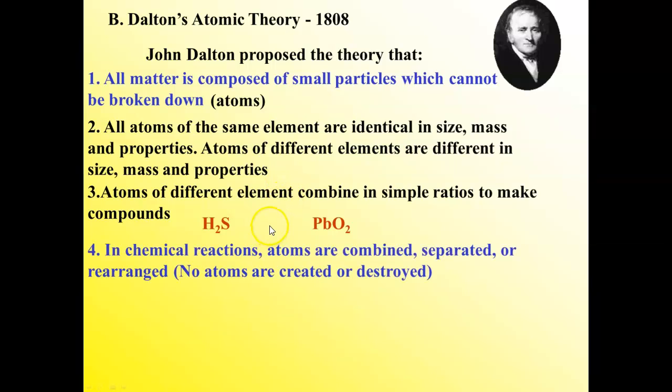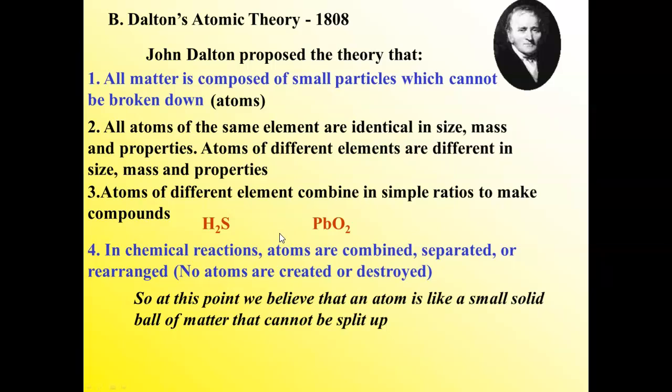His fourth point was that a chemical reaction is not the creation of atoms or the destruction of atoms. It's just the rearrangement of atoms. Putting atoms together, separating atoms, moving them around in different ratios. This actually explains the law of conservation of mass. No matter is created or destroyed, the atoms just rearrange themselves. These four points are important to know. But as a result of this theory, we come to our next model, which is known as the cannonball model. At this point, we believe the atom is just a small, solid object with no parts. Just a solid ball that can't be broken up.